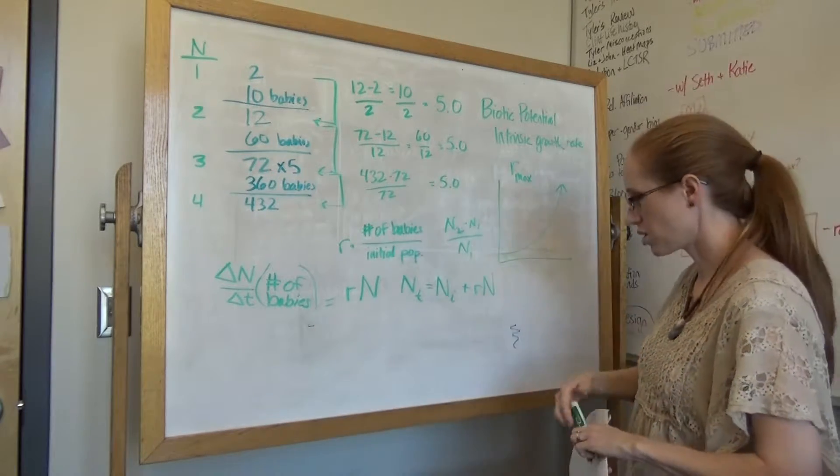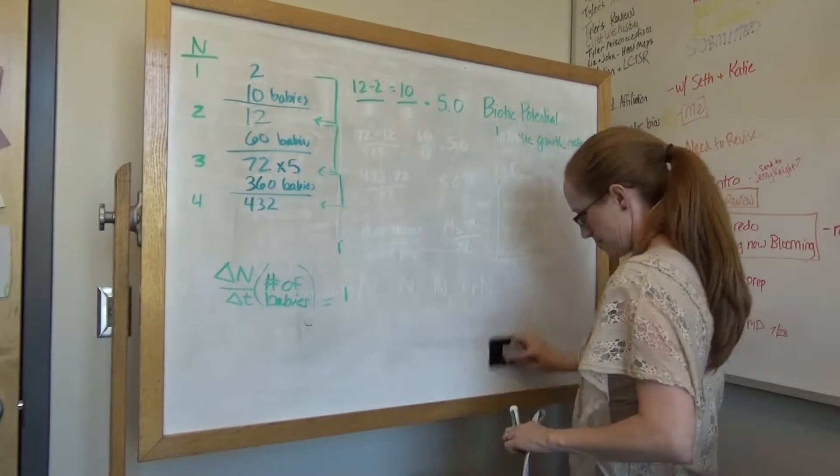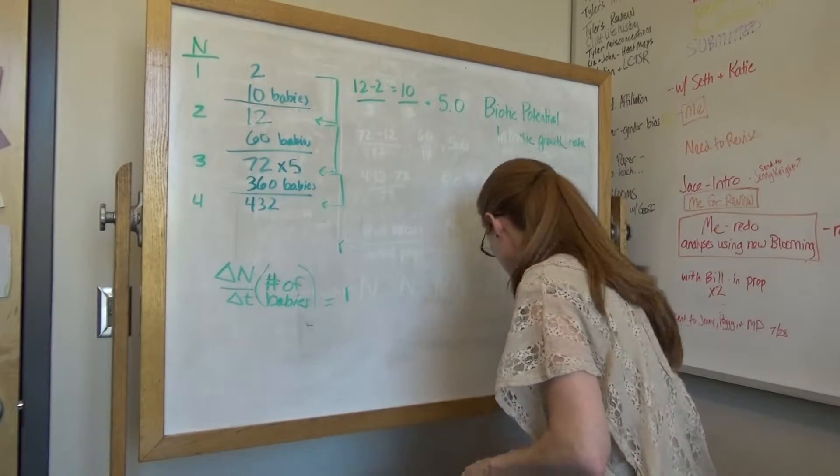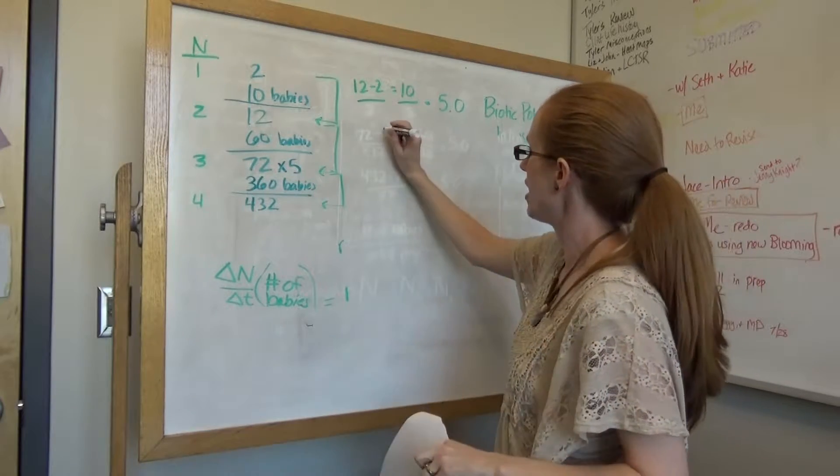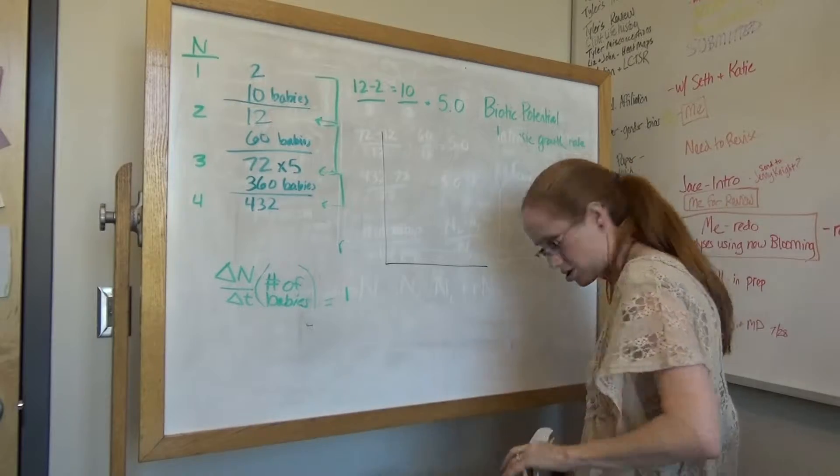So they're going to end up with some kind of graph that looks like, let's see, I'm going to draw it in black. They should have the expected numbers. That's a terrible black marker. Let me get a better one just a second.